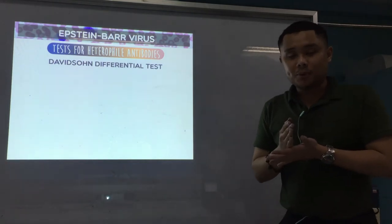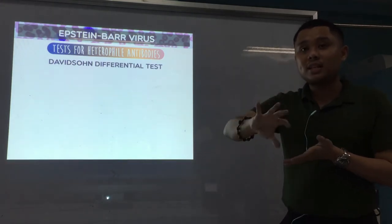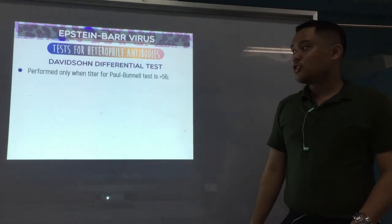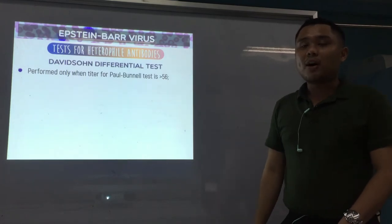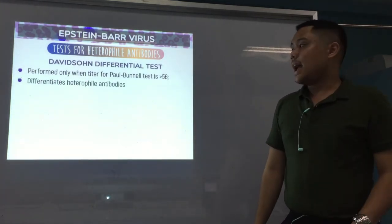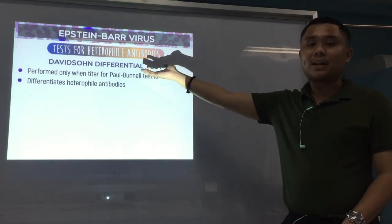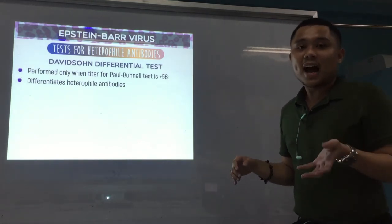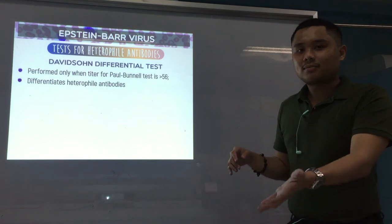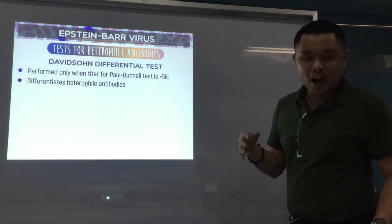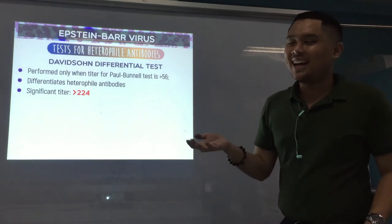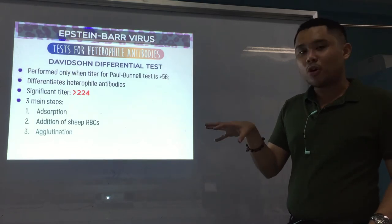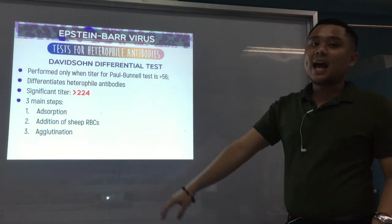Because of the limitations of that test, we can proceed to the Davidson Differential. You perform the Paul Bunnell Presumptive Test, and if positive, you can proceed to the Davidson Differential. By the name itself — Davidson Differential — it is performed only when the titer of Paul Bunnell is greater than 56. As a differential test, it can differentiate the heterophil antibodies — whether it's really from IM, Forssman, or serum sickness. The significant titer for Davidson Differential is greater than 224. There are three main steps: adsorption, the addition of sheep RBCs, and finally agglutination.